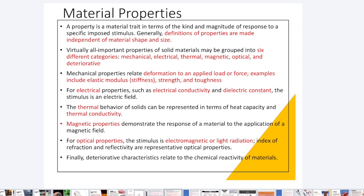For the solid material, which we are discussing in this course, all the properties have been grouped and divided into different categories. Those categories are: mechanical properties, electrical properties, thermal properties, magnetic properties, optical properties, and deteriorative properties — six different categories in total. We have a single chapter over each, and we will discuss all these in detail, but just briefly I will explain all of them here.